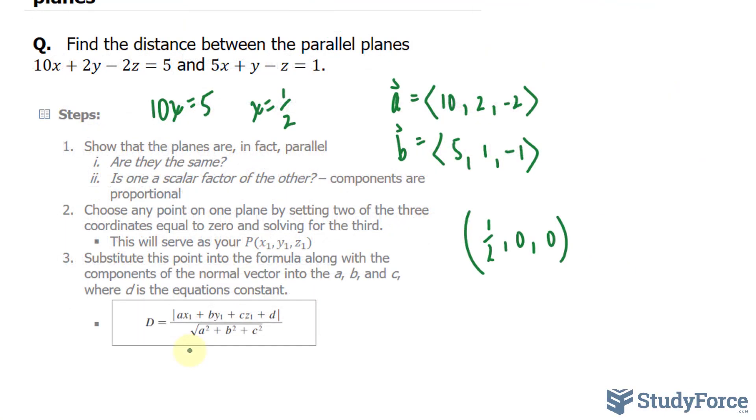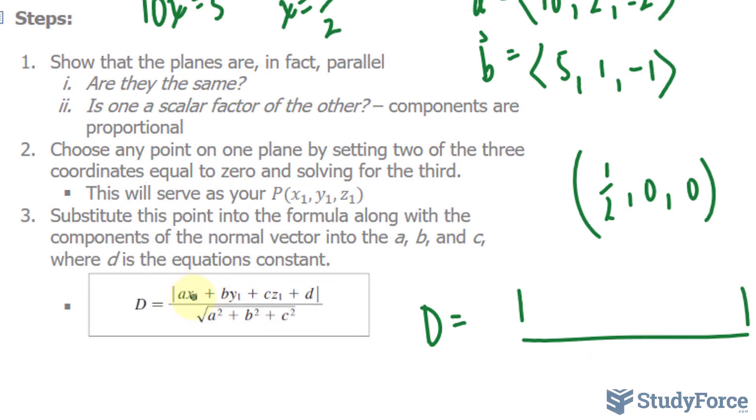So let's go ahead and plug that information into this formula. The distance between two parallel planes is equal to the absolute of a times x sub 1, which is half, a is equal to 5 times 1 over 2, plus b, which is 1, times 0.